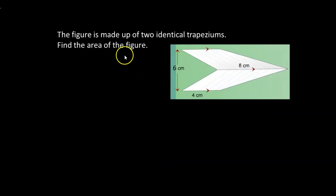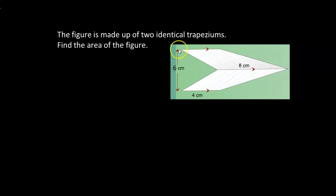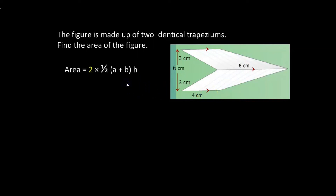The figure is made up of two identical trapeziums — find the area of the figure. If the total height of the shape is 6 centimeters, the height of one trapezium is half of 6, that is 3 centimeters. Now that I know the height is 3 and the parallel sides are 8 and 4, I can use the formula to find the area of the trapezium.